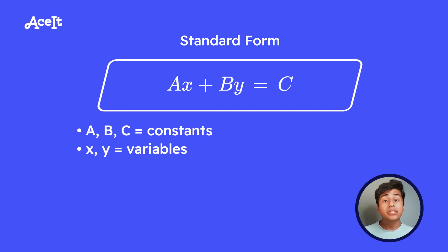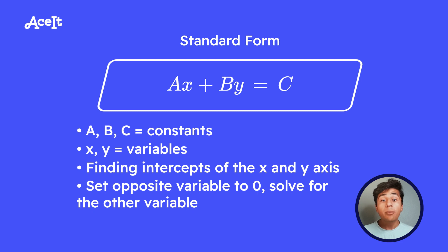Now the standard form is mostly useful for finding intercepts of the x and y axis. So these are the points where your line is going to intersect the x axis or intercept the y axis. And to do this, you set the opposite variable equal to 0, and then solve for the variable whose intercept you're trying to find.